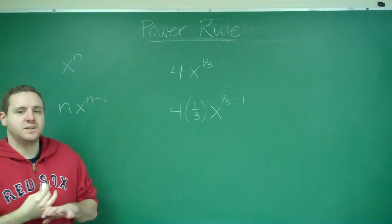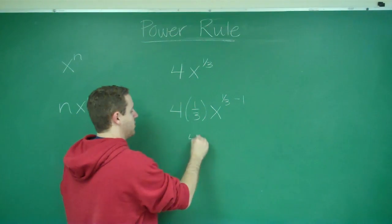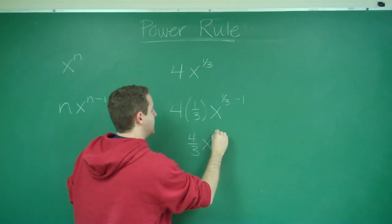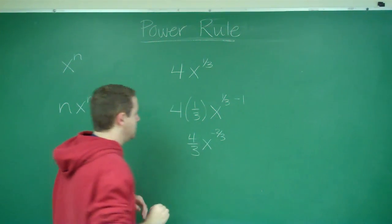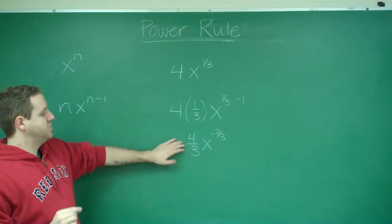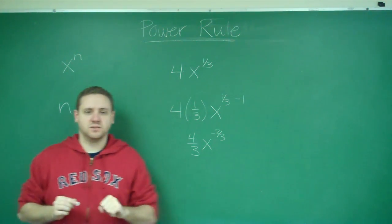So combining everything together here, we're going to get 4 thirds x to the negative 2 thirds, and this would be the derivative of 4x to the 1 third.